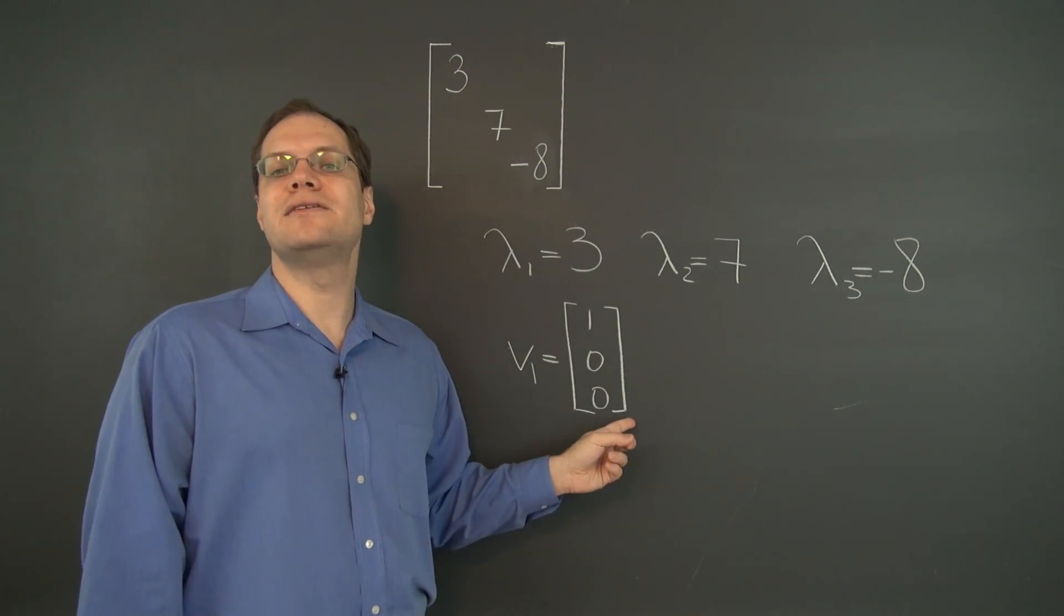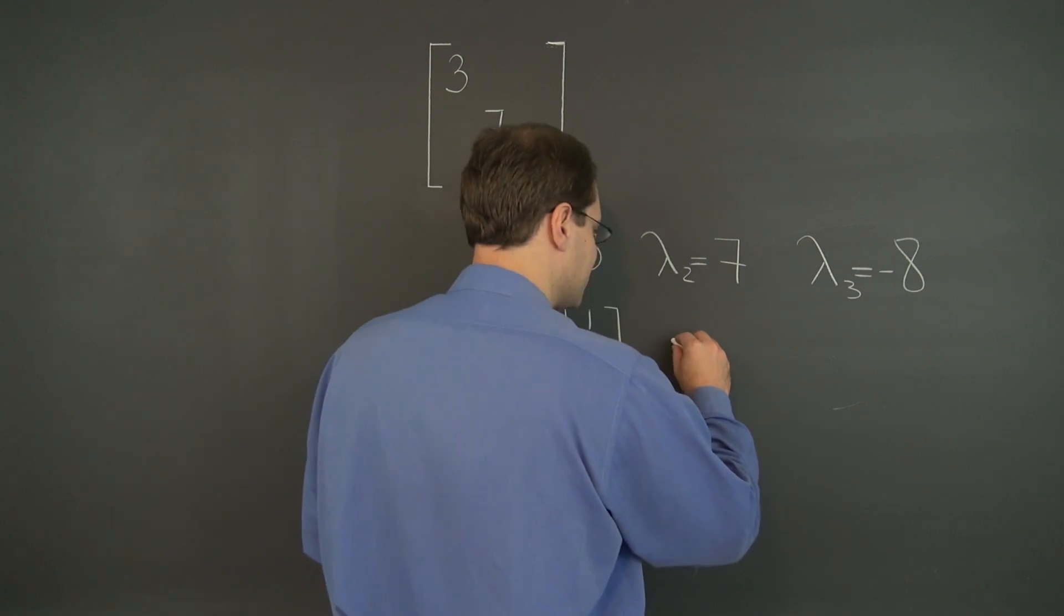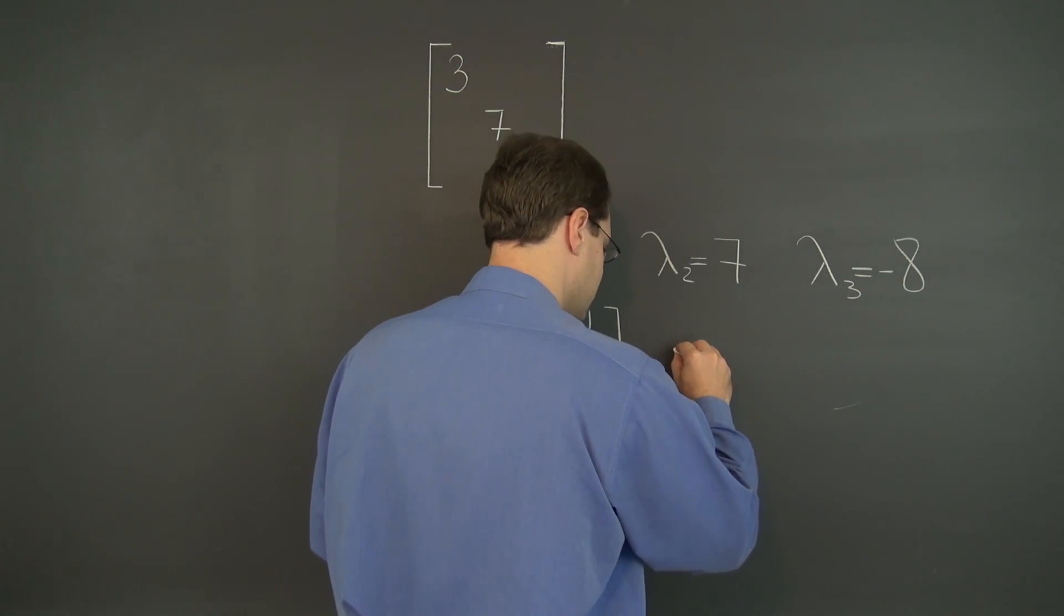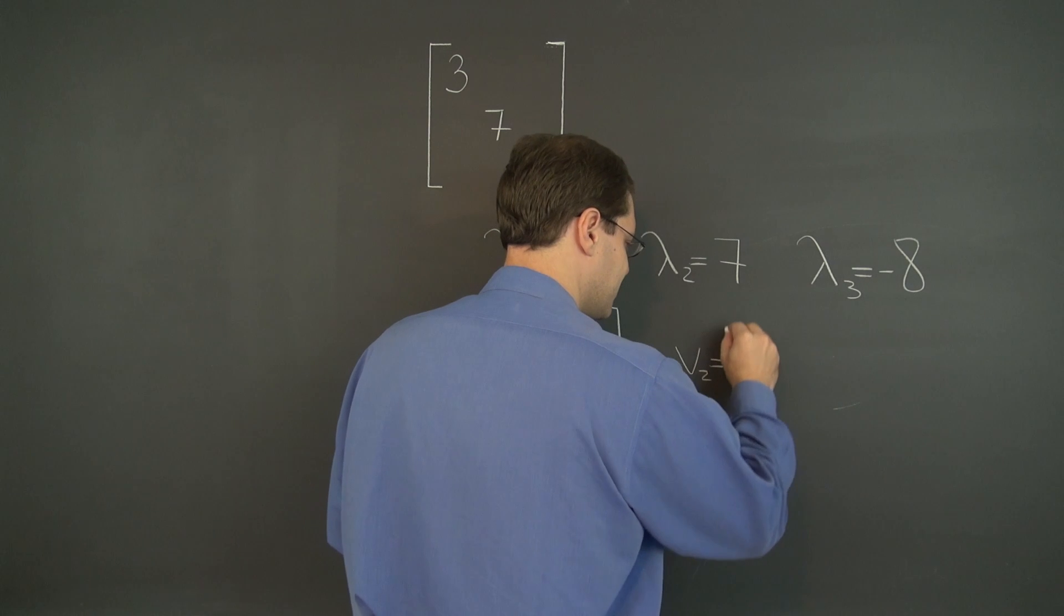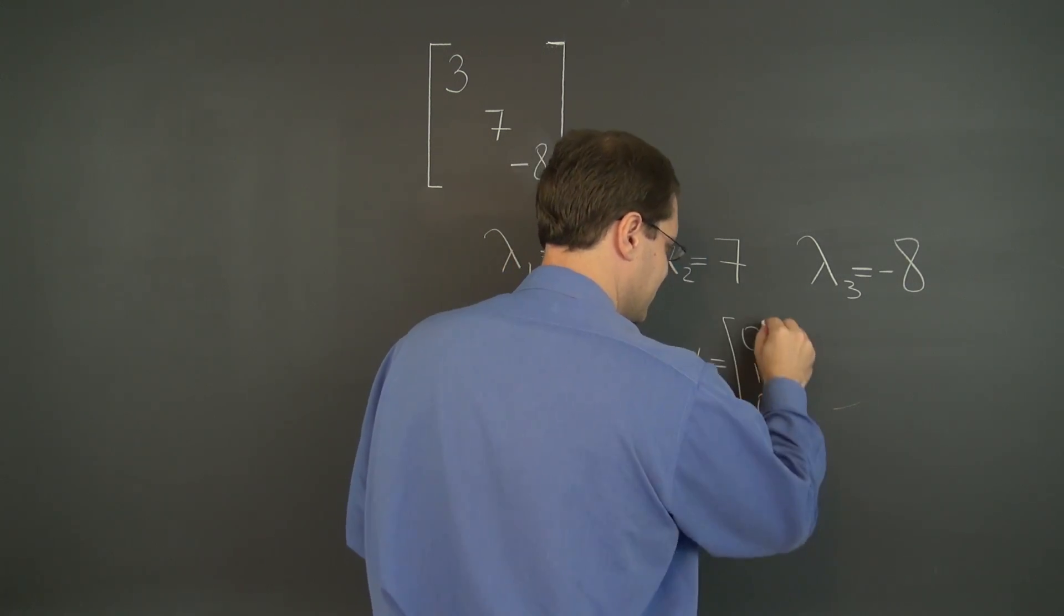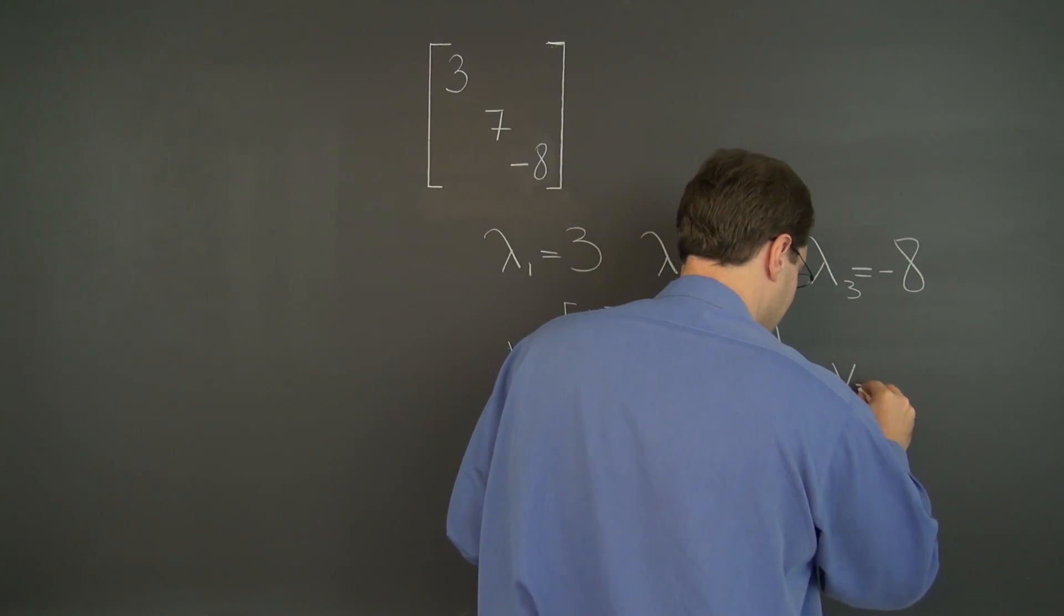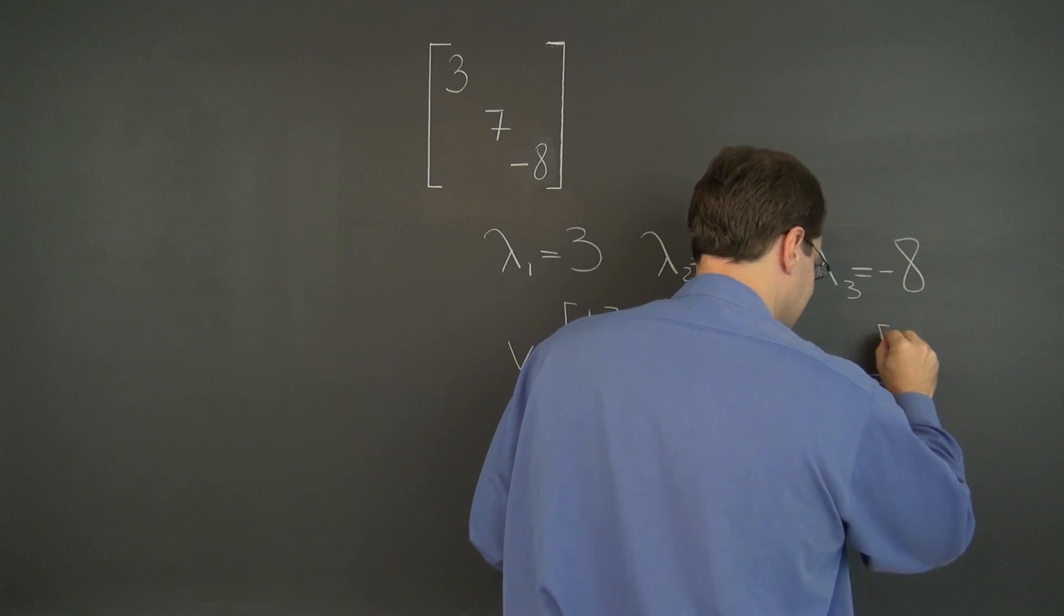And the eigenvector associated with lambda 2 is 0, 1, 0. And the explanation would be just about exactly the same. And finally V3 would be, you guessed it, 0, 0, 1.